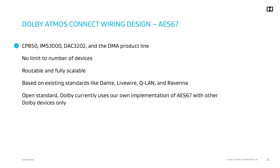Dolby's implementation of AES-67 is utilized on the CP850, IMS-3000, and DAC-3202 units, as well as the DMA product line. It has no limit to the number of devices, is routable and fully scalable. AES-67 is based on existing standards such as Dante, Livewire, QLAN, and Ravenna. Although an open standard, Dolby currently uses their implementation of AES-67 exclusively with other Dolby devices.